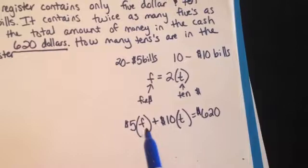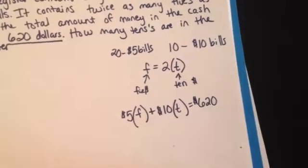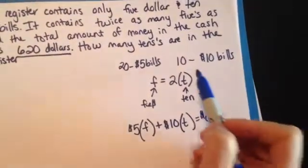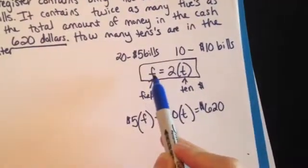This is tricky, though, because these are Fs, or 5s, and these are 10s. I can't combine them. There's no such thing as a $5, $10 bill. So, luckily, I have this equation up here that tells me what F equals.